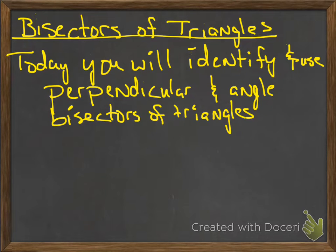Okie dokie, let's get going with the next unit. We are starting now Chapter 5, Unit 6. I don't know how you want to call that, but basically we're saying Unit 6 because it's about to be set for the next test. Anyways, we're going to talk about bisectors of triangles with today's lesson. Today you will identify and use perpendicular and angle bisectors of triangles.